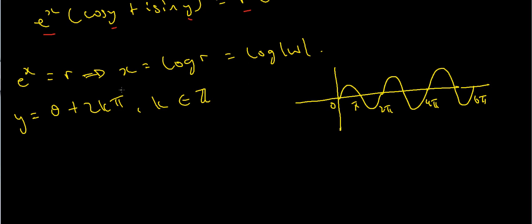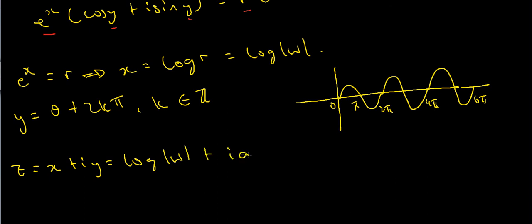Now I've actually solved this equation. I've got z equals x plus iy, which is the logarithm of r — that is, the logarithm of the modulus of w — plus i times y, which is the argument of w. However, this expression is not unique in its imaginary part; the argument is determined only up to 2kπ. So this expression is not unique, and that's a problem.